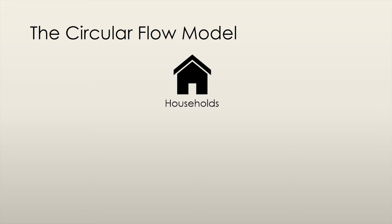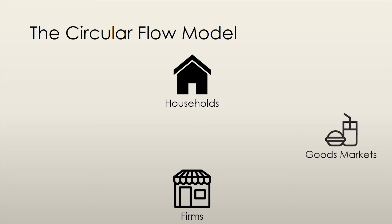The first main entity in our economy is households, which consists of the general population. The second main entity in our economy is firms. We also have goods markets — simply the marketplace where goods and services are traded between buyers and sellers; it is not an entity like a household or a firm. Factor markets are similar to goods markets in that they allow buyers and sellers to trade, but in this case we are trading the factors of land, labor, capital, and entrepreneurship on these markets.